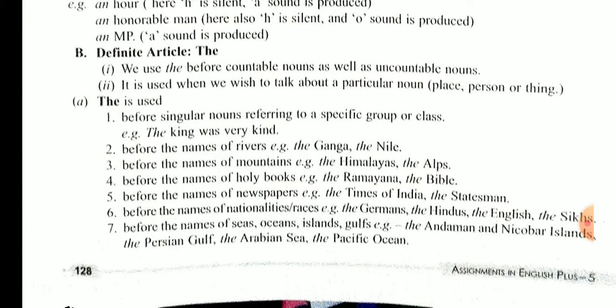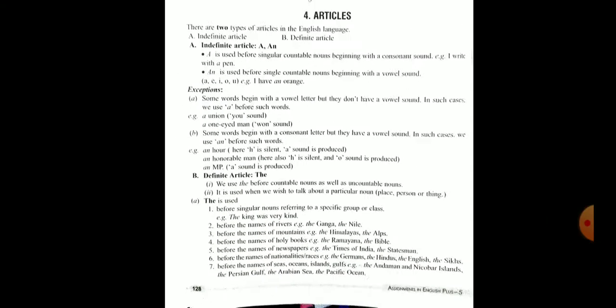Before the name of seas, oceans, islands, gulfs etc. - the Andaman Nicobar Island, the Persian Gulf, the Arabian Sea, the Pacific Ocean। इनके साथ भी हम 'the' use करते हैं।